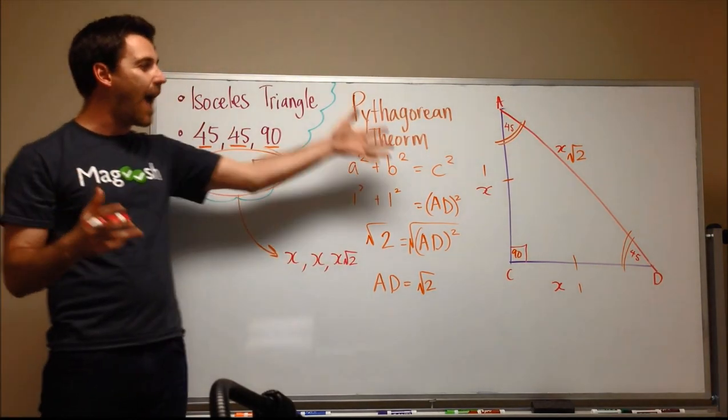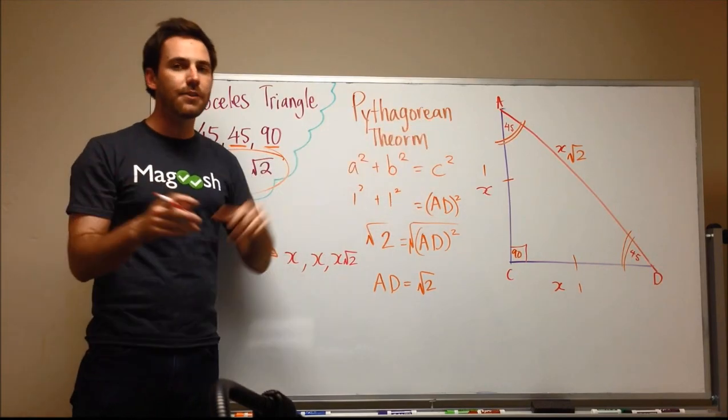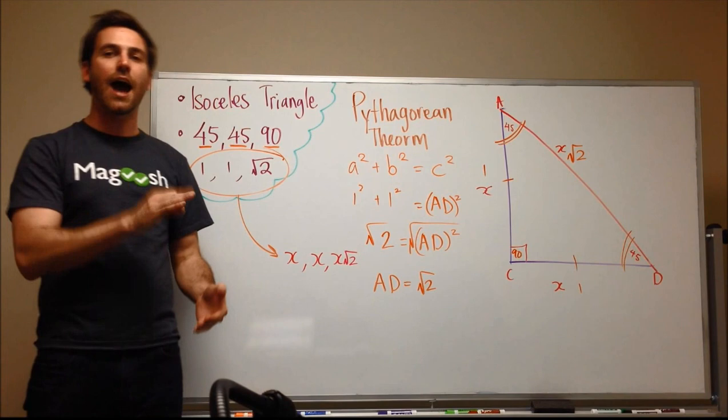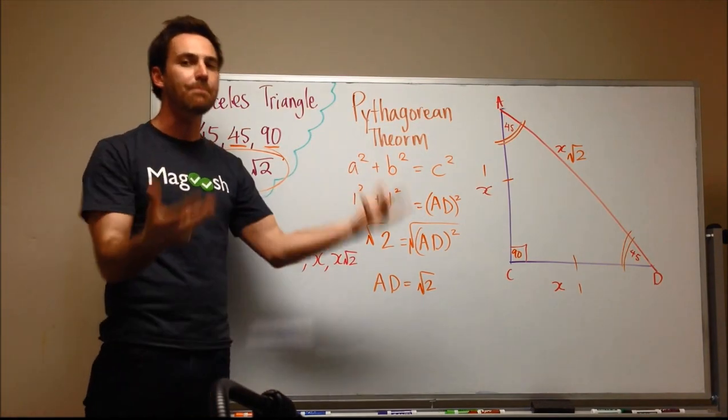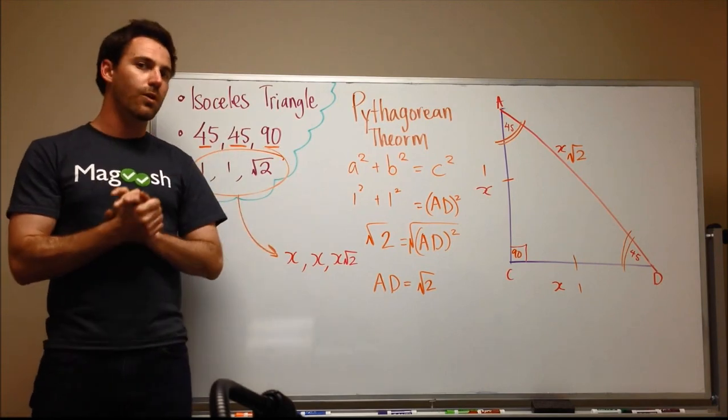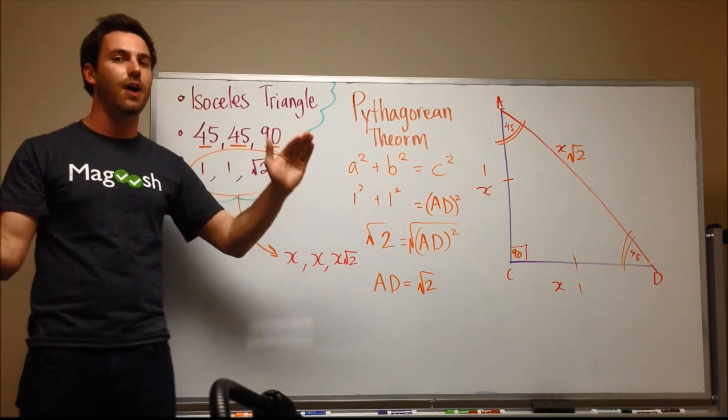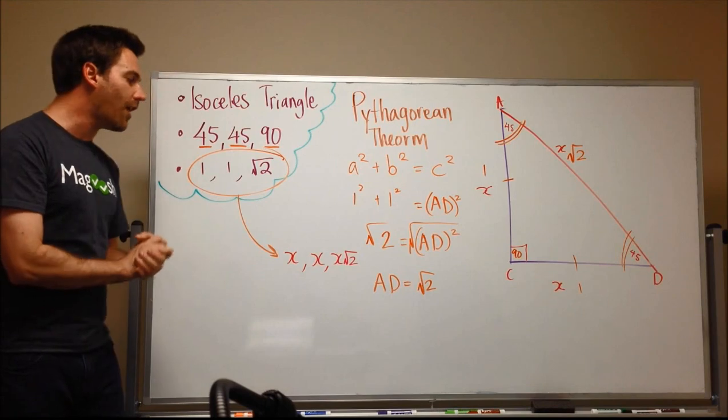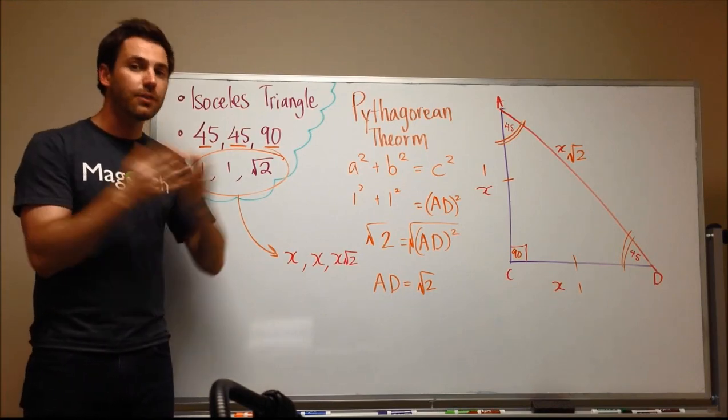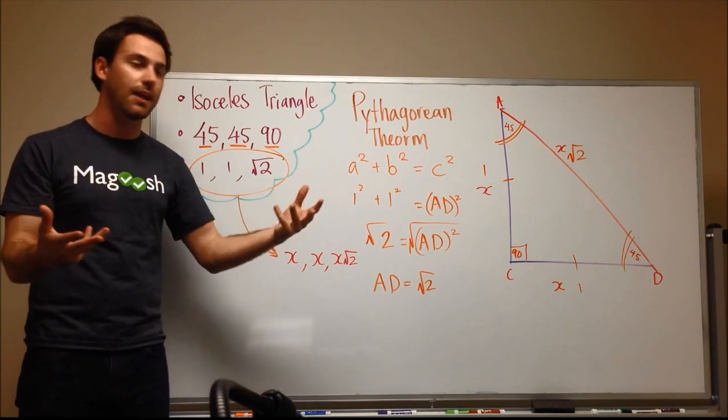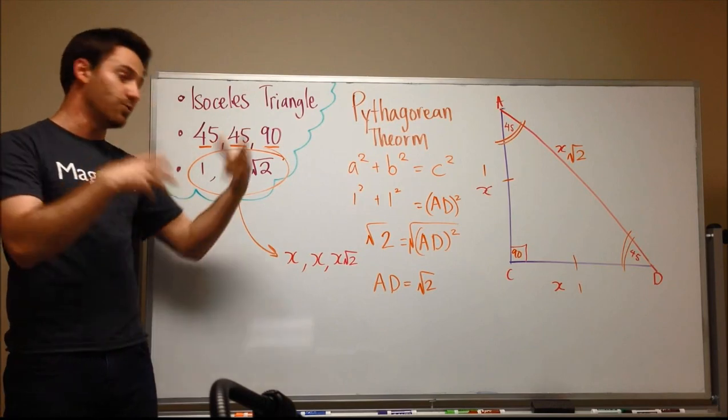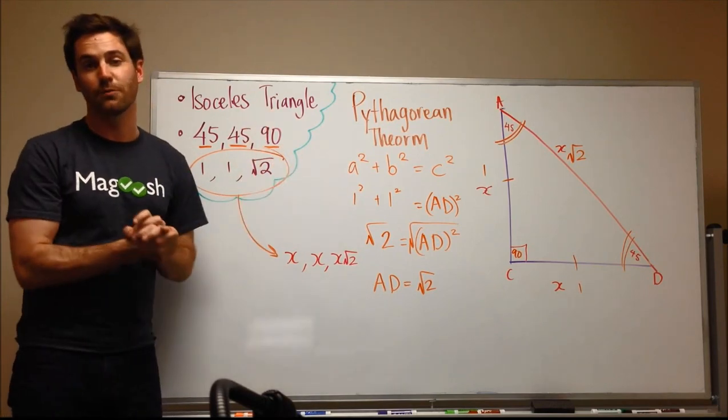But it's also important to remember how to get here. A lot of the math on the GMAT rewards you for knowing how to derive things and how to manipulate different shapes and different formulas. It doesn't reward students who just sit there and memorize the formula. Because a lot of the harder questions at the higher level of the test are really testing your ability to manipulate these mathematical concepts and not just see if you can plug in numbers into a formula.